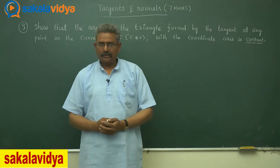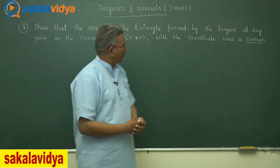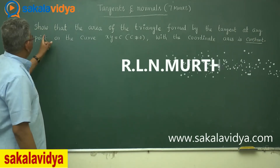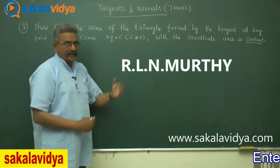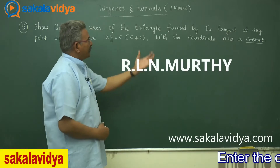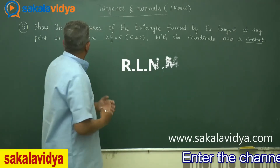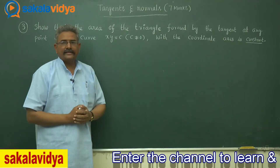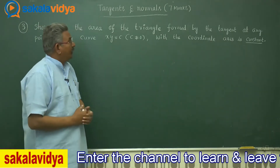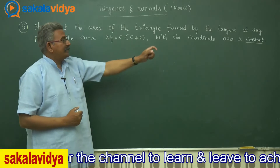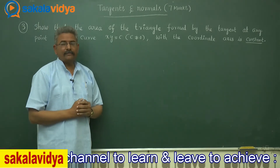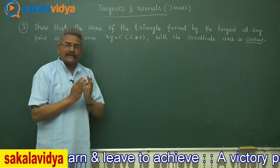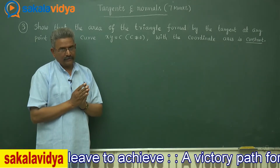Let us solve one more problem. First, let me read the question: show that the area of the triangle formed by the tangent at any point on the curve XY equal to C, where C does not equal to 0, with the coordinate axis is constant.